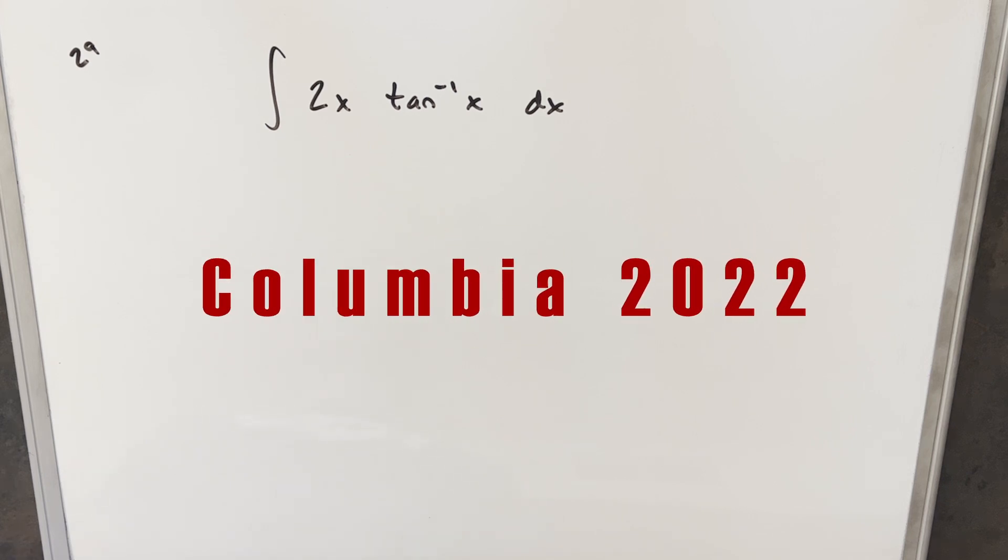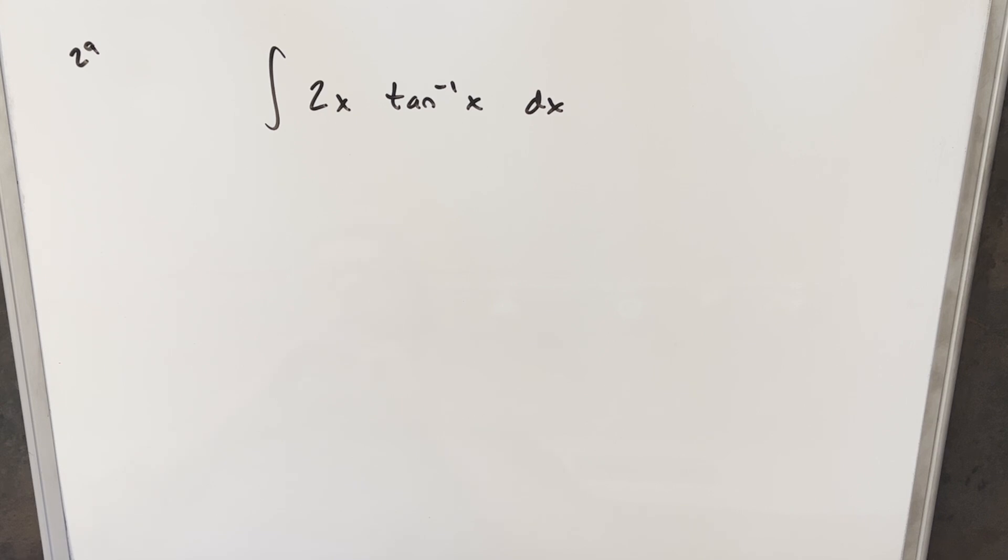Okay, we have here today another integral from the Columbia Integration B 2022, problem 29. We have the integral of 2x Arctan x dx. And I'm not sure, but I think maybe this is the last problem on the Columbia Integration B.